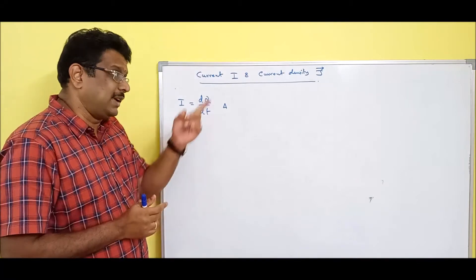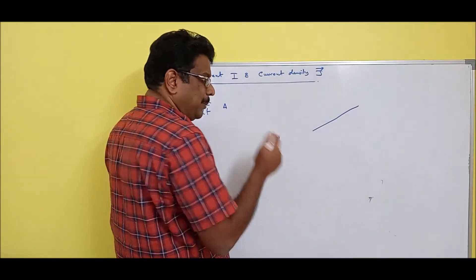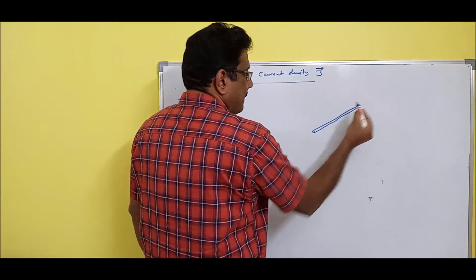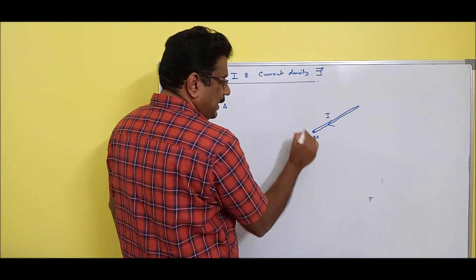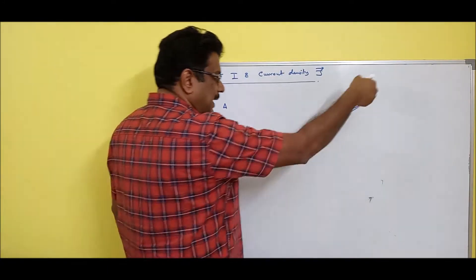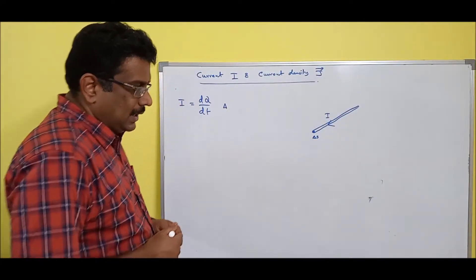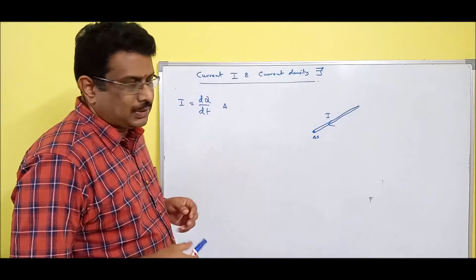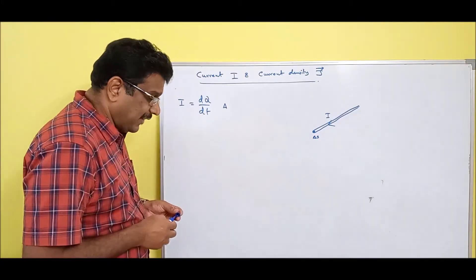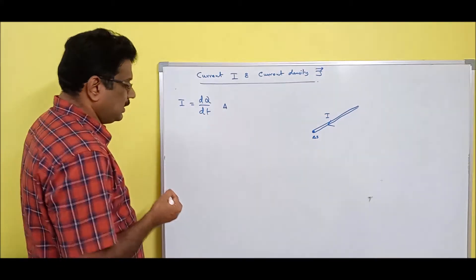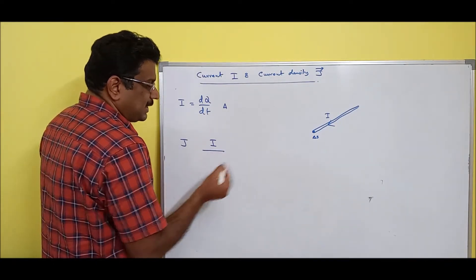Current density J — it is a vector. Assume there is a wire; you should go deep inside. The wire will have some thickness, and in this wire some current is flowing through a cross-sectional area. Let us say delta S. Through that area, how much current is flowing — that is current per area. Current density is defined as current per unit cross-sectional area.